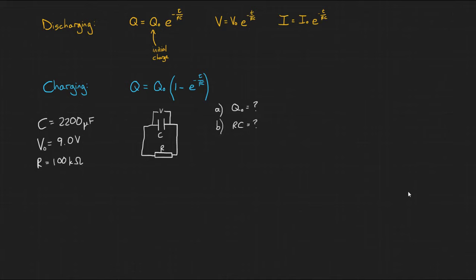B, the time constant of the circuit. C, the potential difference after one time constant. And D, the potential difference after 300 seconds. So to start with, we can find Q0 using the capacitor equation, Q equals CV, using the initial voltage. So substituting our numbers in, 2200 times 10 to the minus 6 multiplied by 9, we get 2 times 10 to the minus 2 coulombs.